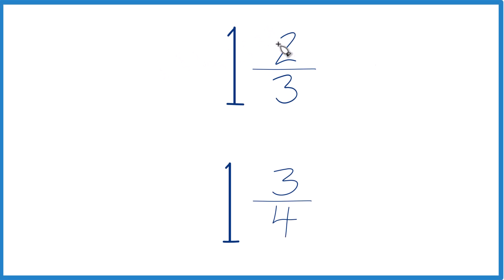So if you're asked to figure out which fraction is greater, 1 and 2 thirds or 1 and 3 fourths, here's how you can do that. So since we have 1 here and 1 here, that's the same, that's equal. So let's just ignore that and focus on the 2 thirds and the 3 fourths.